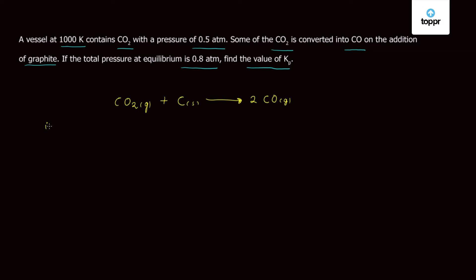So initially there was only CO2 and the pressure corresponding to it is 0.5 atm. And there was no C solid and carbon monoxide present. So the pressure of carbon monoxide here initially is 0 atm.